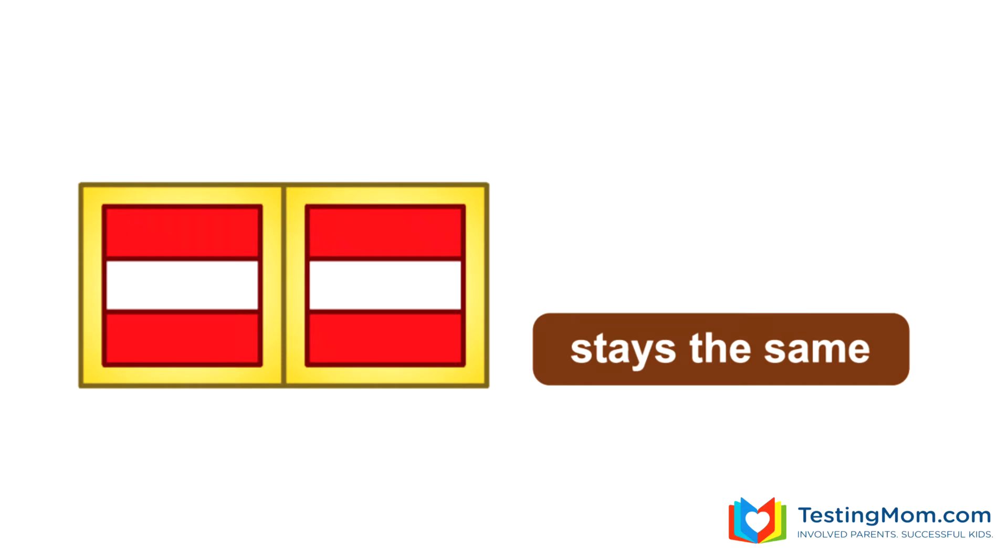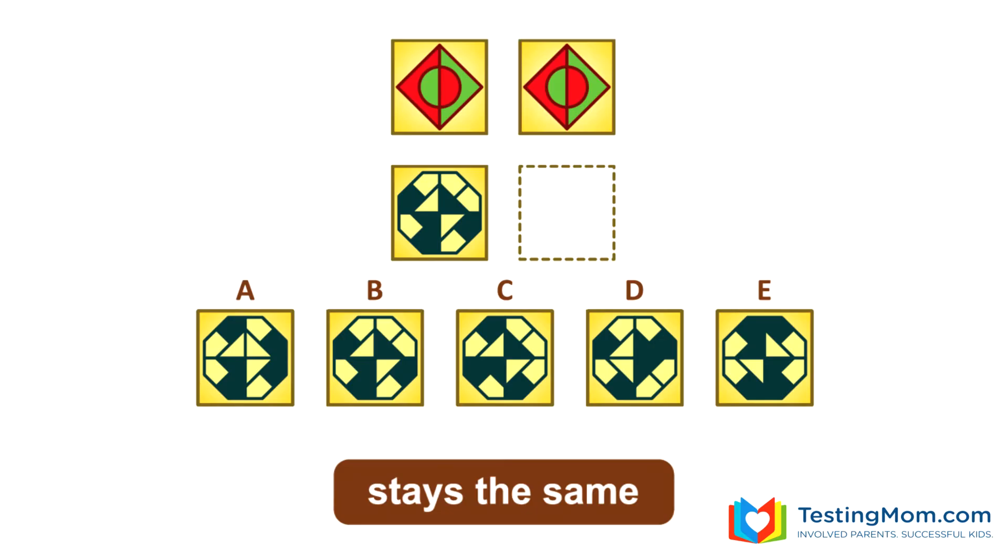Here the rule is that the figures stay the same from the left to the right box. And here is an analogy puzzle where the figures on top stay the same. So we're looking for an answer where the figures on the bottom stay the same. If you examine the answer choices closely, you'll see that B is the same as the figure on the left. B is the answer.